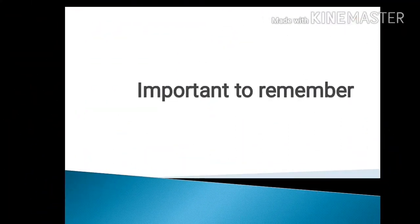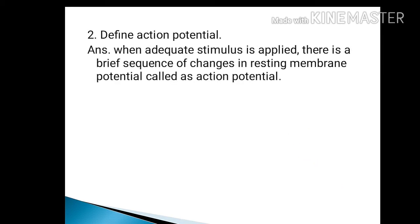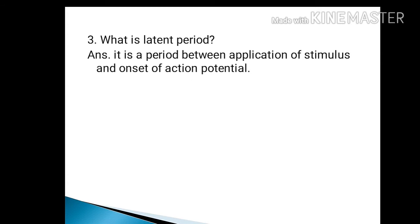Important points to remember. Resting membrane potential is defined as the membrane potential at rest when no stimulus is applied. Action potential: when an adequate stimulus is applied, there is a brief sequence of changes in resting membrane potential called action potential. Latent period is the period between application of stimulus and onset of action potential.